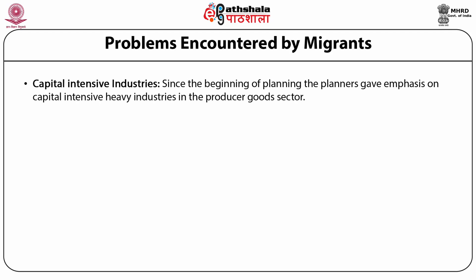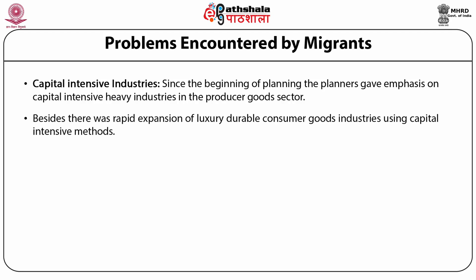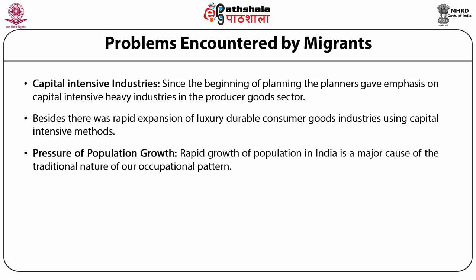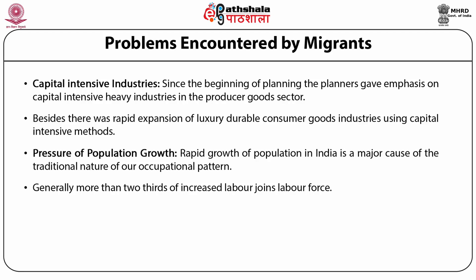Fourth, capital-intensive industries: since the beginning of planning, emphasis on capital-intensive heavy industries in the producer goods sector had very limited employment generation effects, and there was no shift of surplus labour from the agriculture sector to the industrial sector. Fifth, rapid population growth in India is a major cause of the traditional nature of the occupation pattern. Due to population explosion, there is a sharp increase in the workforce, especially in rural parts. More than two-thirds of the increase joins the labour force, and lack of alternative employment in agriculture leads to disguised employment and under-employment.